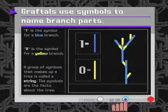The computer program needs symbols to name branch parts. Here we've defined our blue parts as the symbol 1, and the yellow parts as the symbol 0. These ones and zeros are what goes into the string in the computer program.